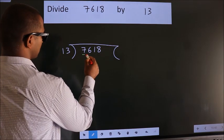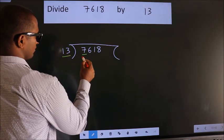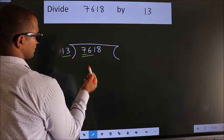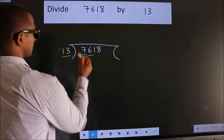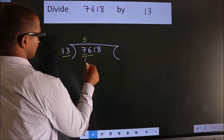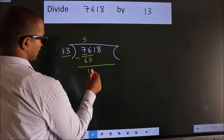Here we have 7. Here 13. 7 is smaller than 13, so we should take two numbers: 76. A number close to 76 in the 13 table is 13 times 5 equals 65. Now we subtract. We get 11.